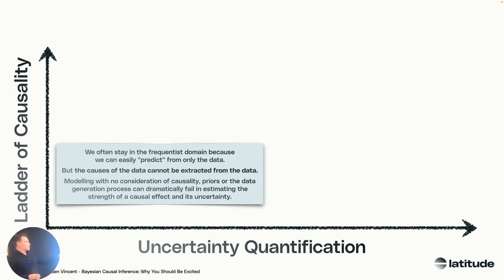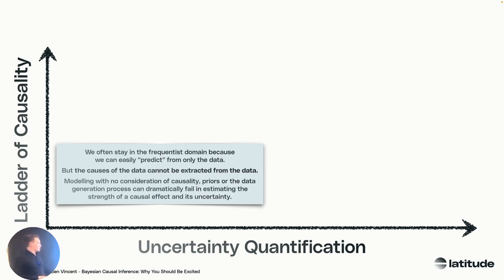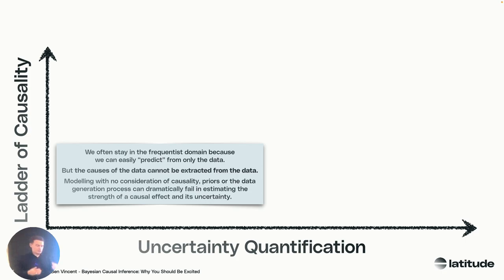Here's the frequentist domain — classic data science. We quite often stay here. I will show this with packages in Python in a little bit so you can feel where you're at and what you're familiar with. But the thing is that as soon as you have your data, the causes of how the data came to be are not in the data itself. This part of machine learning is quite limited in that scope — there's no consideration of causality or priors.